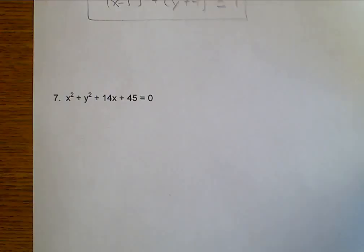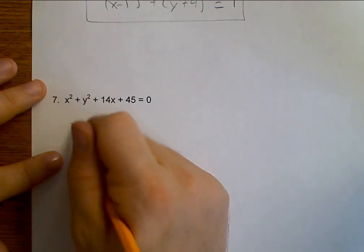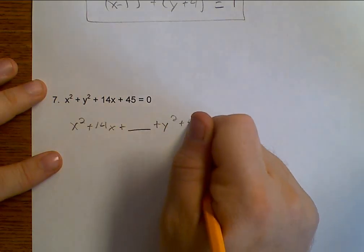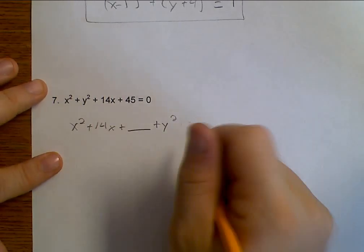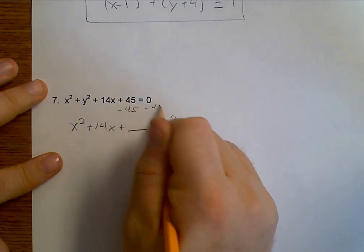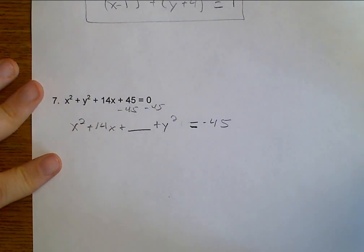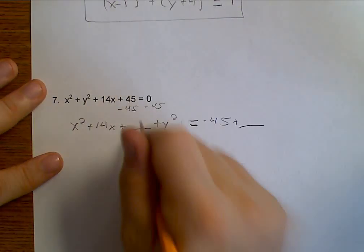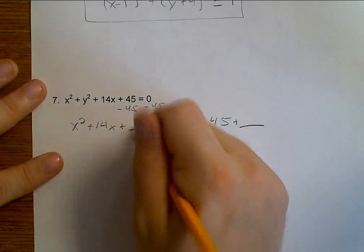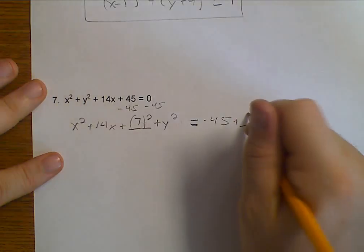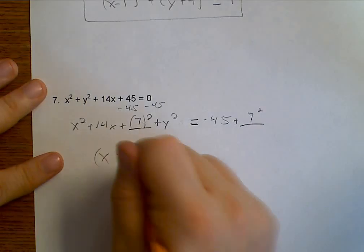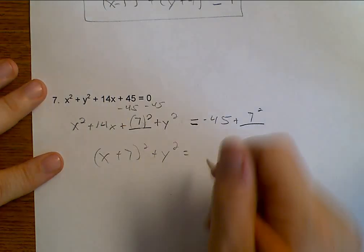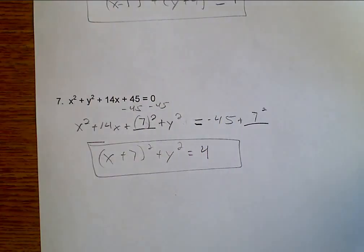Now let's look at example number 7. We have no coefficients, so we can go ahead and rearrange: x squared plus 14x plus blank, plus y squared, equals negative 45. Because I don't have any y terms I just leave this as y squared. Half of 14 is 7, so this would be 7 squared. So now this is x plus 7 squared plus y squared equals negative 45 plus 49, which is 4. And that is completing the square.